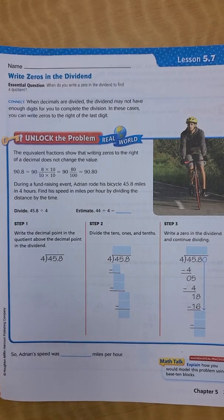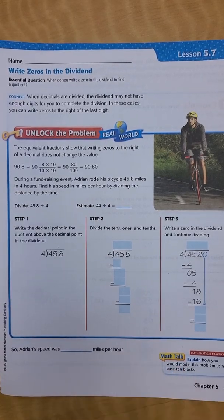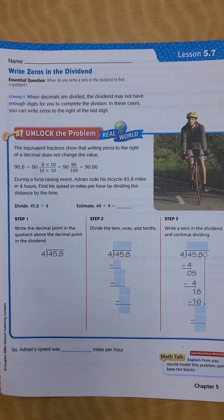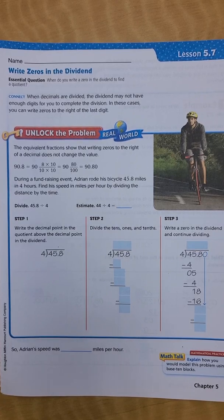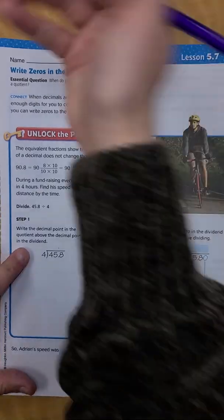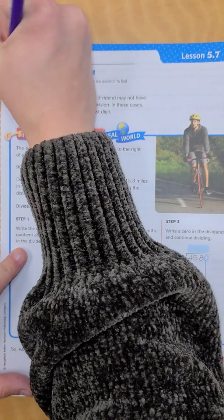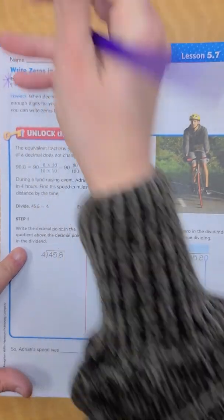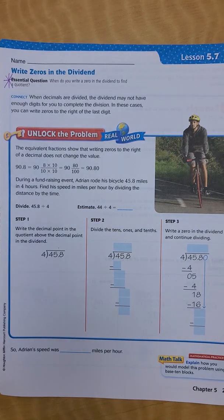Hey guys, here is lesson 5.7, Write Zeros in the Dividend. Our central question today is: when do you write a zero in the dividend to find a quotient? Put your star beside your central question, and we're going to read where it says connect.